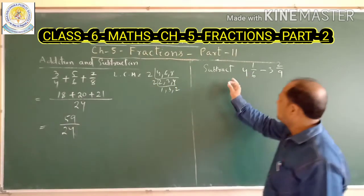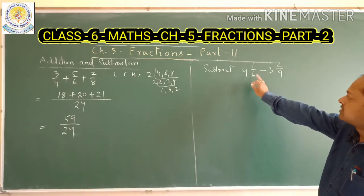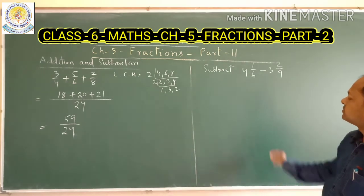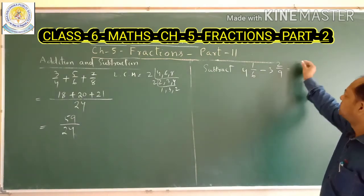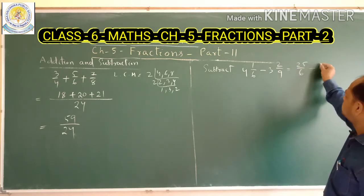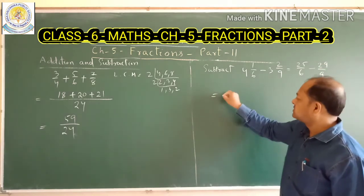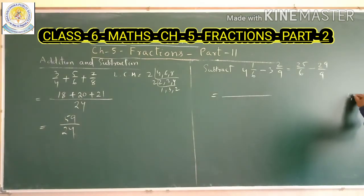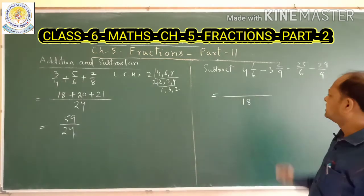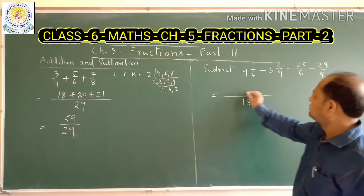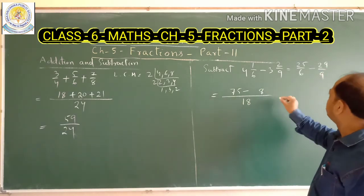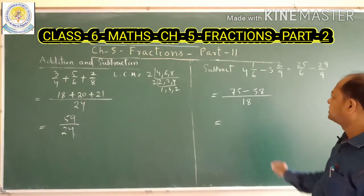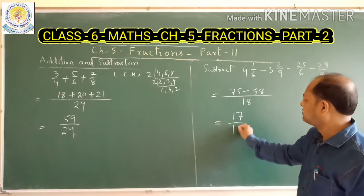Now in this example we have subtraction with mixed fractions. First convert to improper fractions: 4 sixes are 24, plus 1 is 25, giving 25 upon 6. And 3 nines are 27, plus 2 is 29, giving 29 upon 9. Now find the LCM of 6 and 9. LCM of 6 and 9: dividing by 3 gives 2 and 3, so LCM is 3 into 2 into 3 which is 18. 18 divided by 6 is 3, 3 into 25 is 75. 18 divided by 9 is 2, 2 into 29 is 58. So 75 minus 58 is 17 upon 18 as the solution.